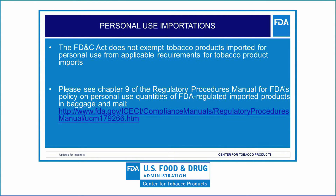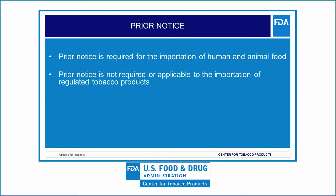Another question we frequently receive from importers is whether there are any exceptions to FDA regulations for the importation of tobacco products for personal use. The FD&C Act does not exempt tobacco products imported for personal use from applicable requirements for tobacco product imports. Therefore, under Section 805I of the FD&C Act, imported tobacco products are subject to refusal of admission if, among other things, they are or appear to be adulterated or misbranded. CTP follows the FDA policy on coverage of personal importations in Chapter 9 of the RPM regarding personal use quantities of FDA-regulated imported products in baggage and mail.